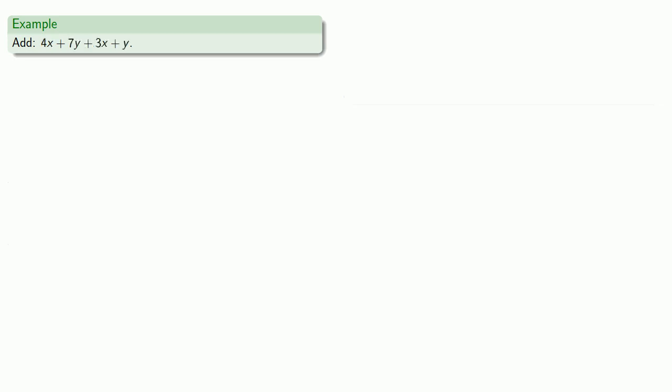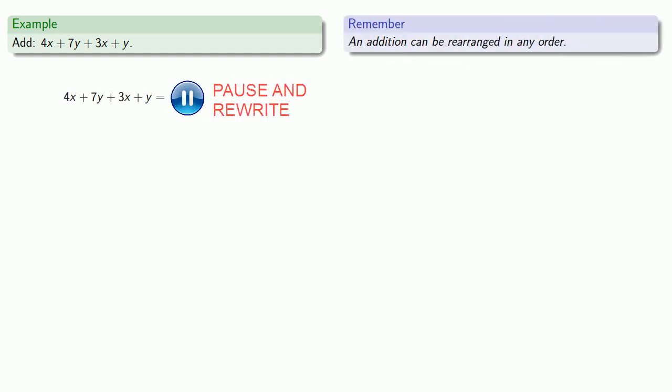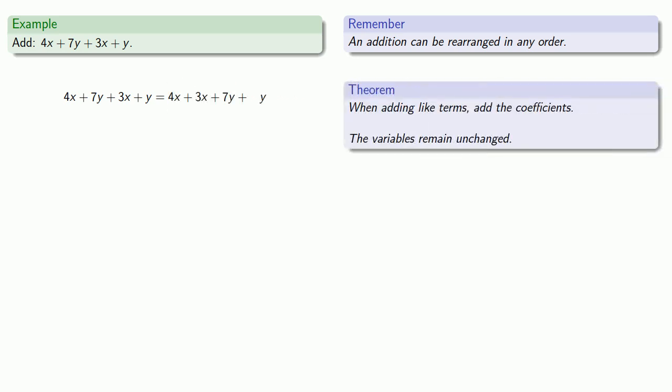Let's take a look at 4x plus 7y plus 3x plus y. While we don't need to do it, we can rearrange the addition in any order that we want to. So let's rewrite this so our like terms are at least close to each other. When we add like terms, we add the coefficients. So 4x plus 3x will be 4 plus 3, that's 7, and the variable remains unchanged, x.